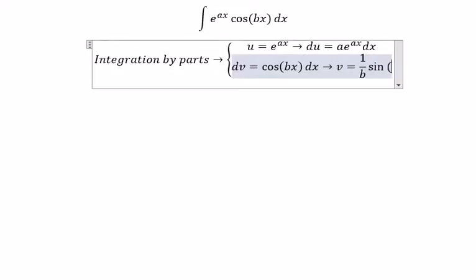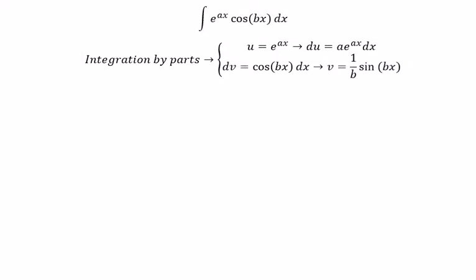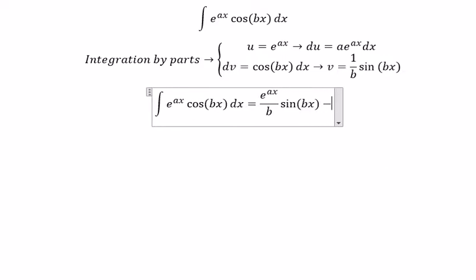sine(bx). So in this situation, we have u multiplied by v, and we have negative 1 over b. We have u multiplied by v.